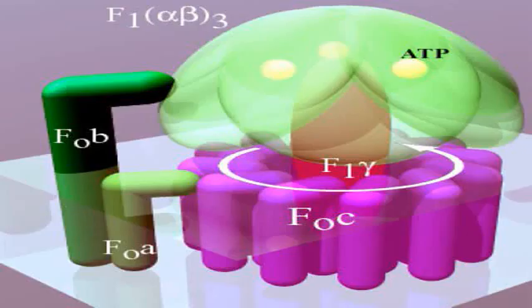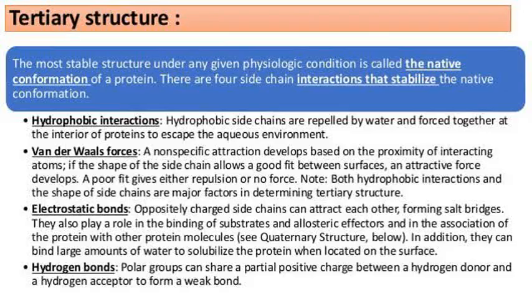One subunit is made of one polypeptide chain. A polypeptide chain has one gene coding for it, meaning that a protein must have one gene for each unique subunit. A subunit is often named with a Greek or Roman letter, and the number of this type of subunit in a protein is indicated by a subscript.